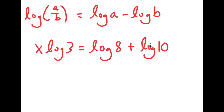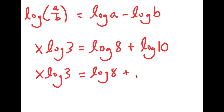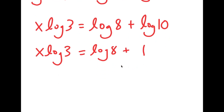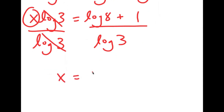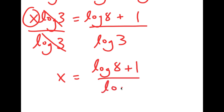Now, if you didn't already know, log 10 is simply equal to 1. So I get x times log 3 is equal to log 8 plus 1. And now remember, we want to isolate x. So the only thing left to do is to get rid of log 3 by dividing both sides by log 3. Then this cancels out, and I get x is equal to log 8 plus 1 over log 3.